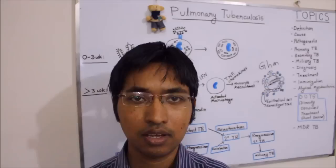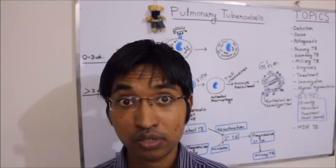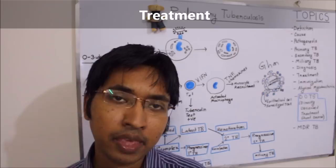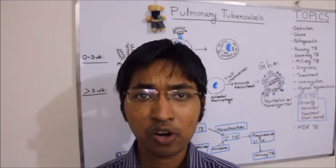Moving on to treatment. A variety of drug treatments are available for pulmonary tuberculosis, and we usually divide these drug therapies into two phases. The first is the initial intensive phase, where our goal is to rapidly reduce the number of mycobacterium tuberculosis in the patient.